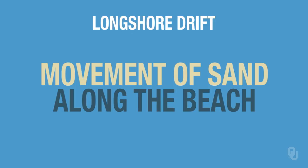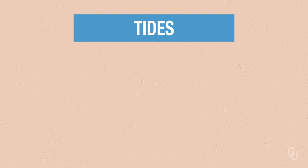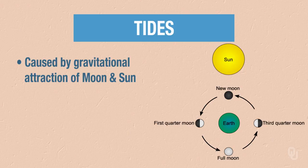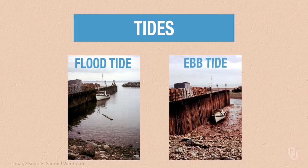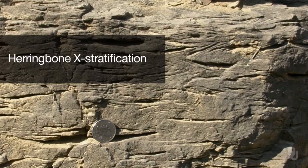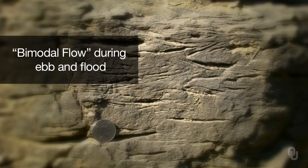To understand tidal inlet migration, another process that operates on barrier islands, we need to understand something about tides. Tides are caused by the gravitational traction of the moon and the sun. When their gravitational traction is combined, you get spring tides; neap tides when they're opposed. The flood tide is when the tide comes in; the ebb tide is when it goes out. Here's a picture of herringbone cross stratification — a pattern of flow in one direction and then flow in the opposite direction, bimodal flow during the ebb and flood. That's indicative of tides, from an ancient rock about 300 million years old. Because of longshore drift, sand moves along barrier islands, and inlets form because tides have to come in and go out.